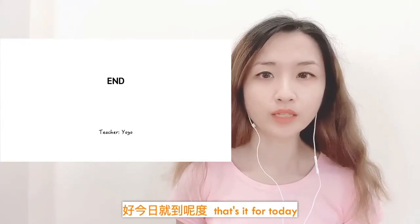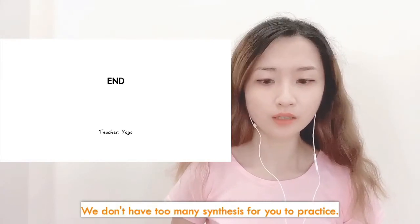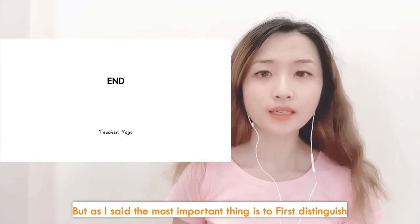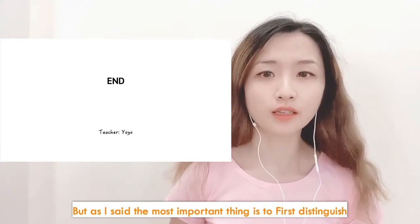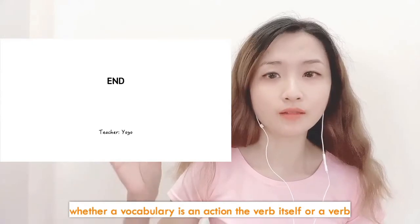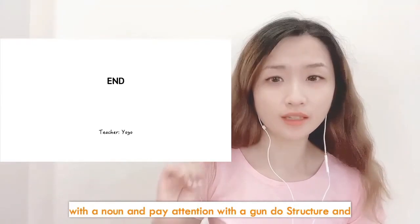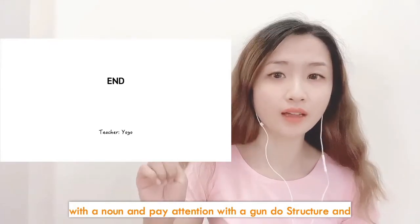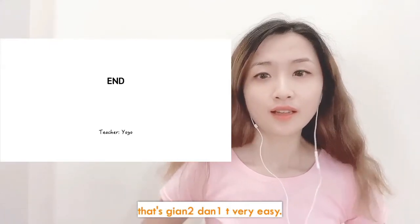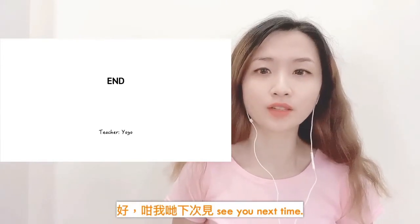今天就到这里 — that's it for today. We don't have too many sentences to practice, but the most important thing is to first distinguish whether a vocabulary item is the verb itself or a verb with a noun, and pay attention to the 緊 'doing' structure. That's it — very easy! 那我们下次见 — see you next time!